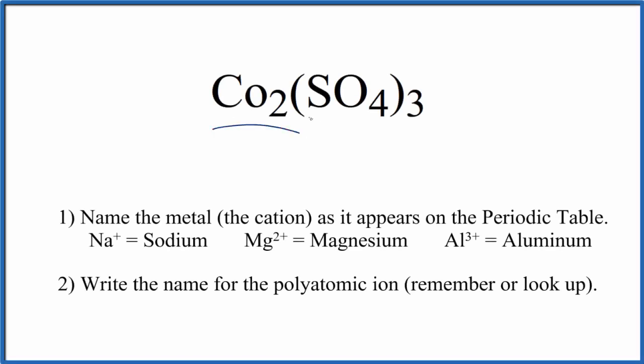To write the name for Co₂(SO₄)₃, we need to recognize that this Co is cobalt, a transition metal, and this SO₄, the whole thing here, is a polyatomic ion, a group of nonmetals. So we're going to use these rules to write the name for Co₂(SO₄)₃.